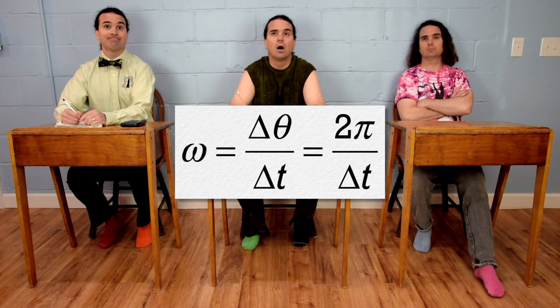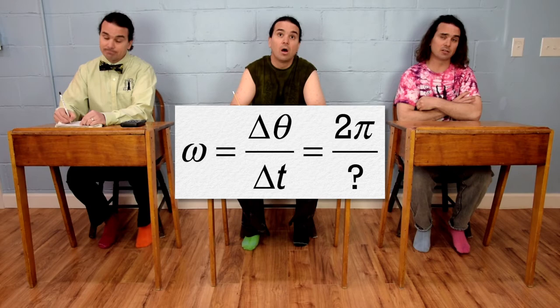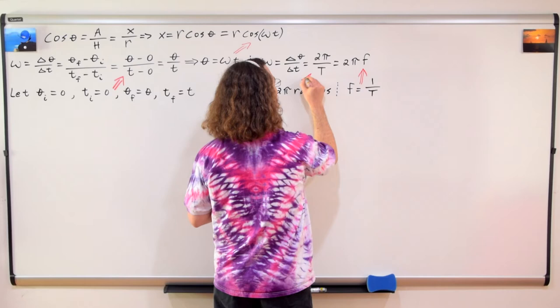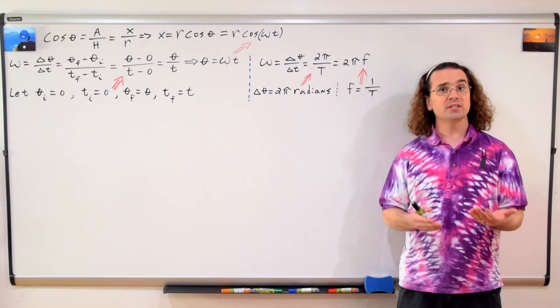What is the change in time for one full cycle called? The change in time for one full cycle is the period, capital T. And because frequency equals the inverse of the period, omega equals two pi times frequency, which we can substitute back into the equation for the x position of the yellow marker cap in simple harmonic motion.